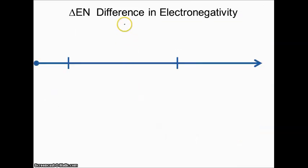So what we do is we calculate the difference in electronegativity. The symbol for that is delta EN because delta means change in. We sort of look at the change in electronegativity between the two atoms. We would start here at 0, where there is no difference in electronegativity - we've got two of the exact same atom bonded together.